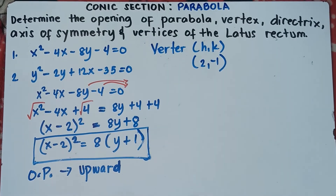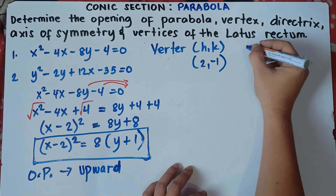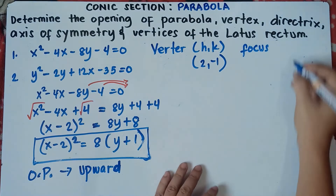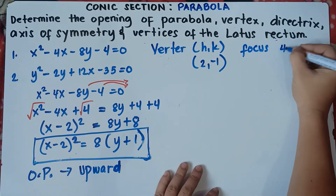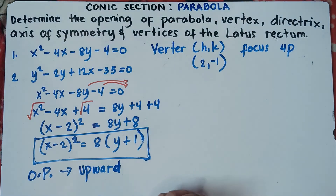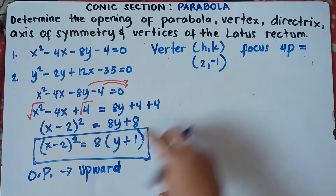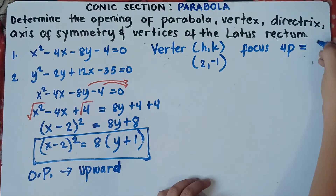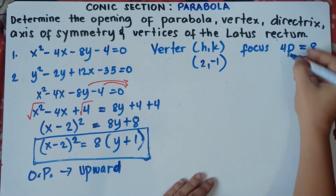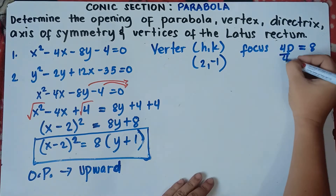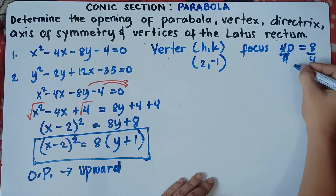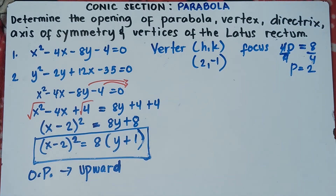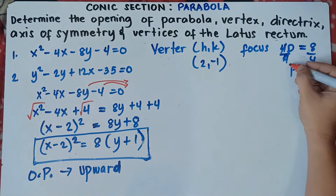Now we need to find the focus. The formula is 4P equals the number before the quantity. So 4P equals 8. Dividing both sides by 4, our P equals 2.